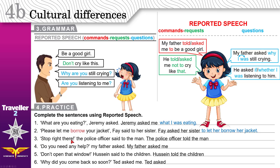Stop right there. Again, this is another command — just like 'be a good girl.' The police officer said to the man: The police officer told the man to stop right there. Do you need any help? This is a yes/no question — just like 'Are you listening to me?' My father asked me if — or whether — I needed any help. Change the verb from present to past.